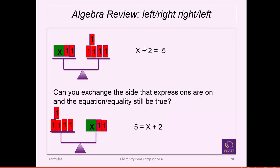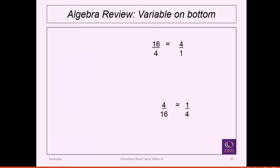Here's another algebra concept: does it matter whether the unknown is on the left or right? If x plus 2 equals 5, it's the same as 5 equals x plus 2. You can exchange sides if that makes you more comfortable. As long as you change both sides over, that's fine. What's driving the decision is: is it still true?